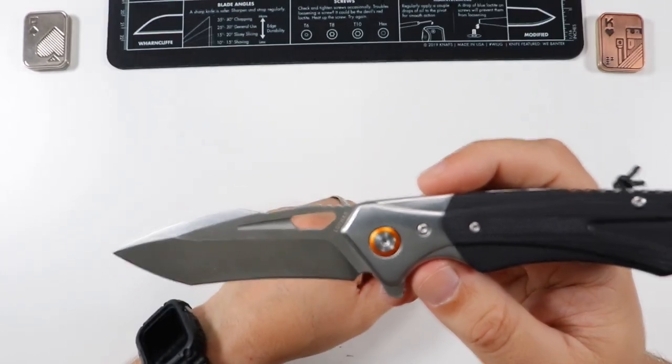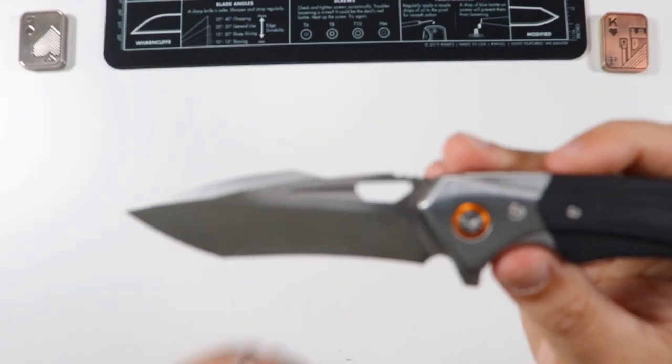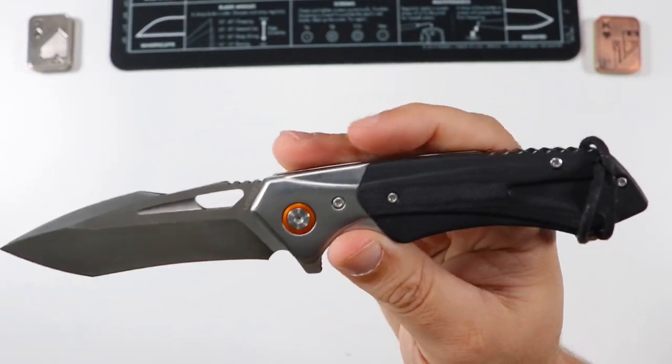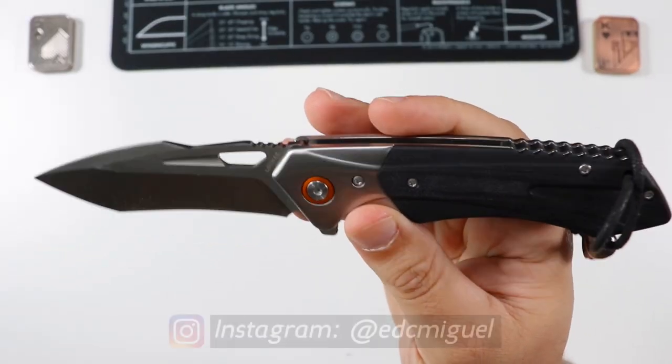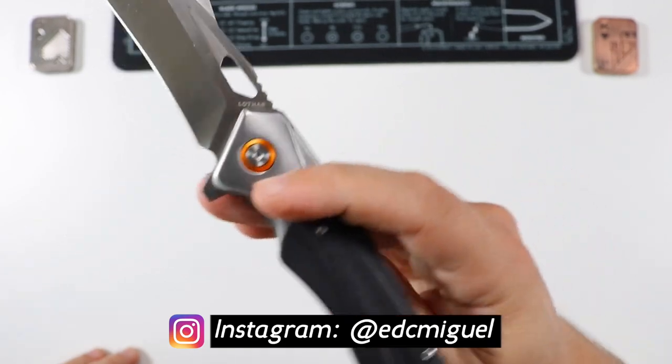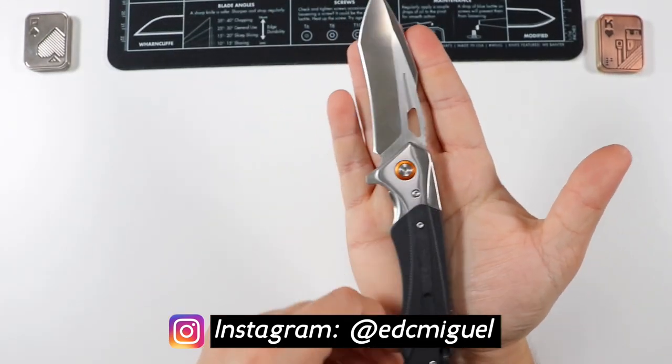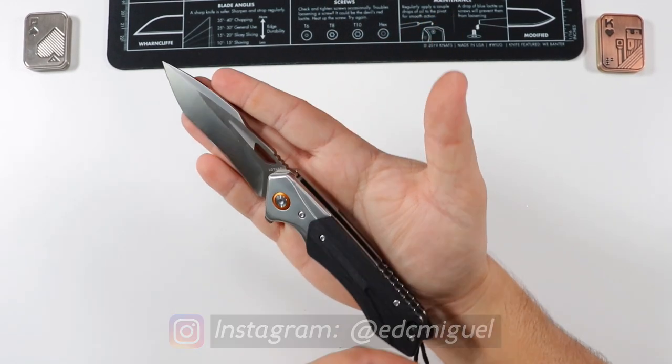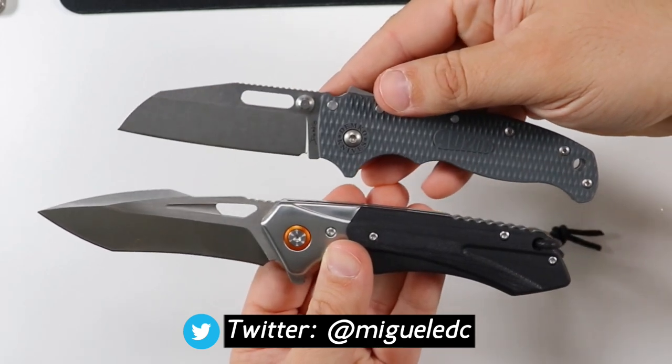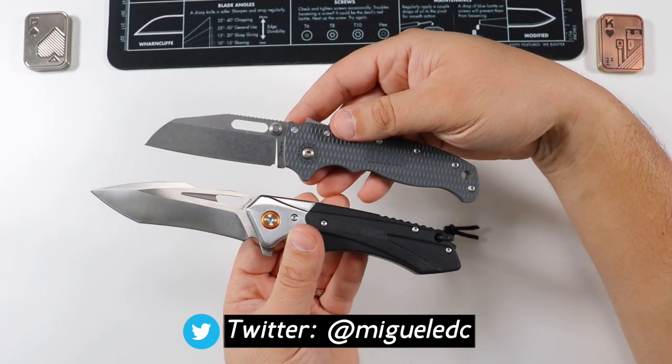Some quick stats of this guy. We have 6.2 ounces, G10 handle with exposed metal as well. D2 on the blade steel right there. This is 8.2 inches overall length, 3.5 right there on the blade. So it is a medium to larger knife right here. Quite substantial. There it is next to the AD 20.5 just for some quick reference. Of course, during the review we're going to get more and more into that.